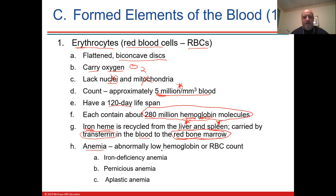Anemia is low hemoglobin, low hematocrit, or low red blood cell count. The hemoglobin number is really what matters most because that's what carries the oxygen. If the red blood cell count goes down, hemoglobin and iron will go down too, leading to iron deficiency anemia.